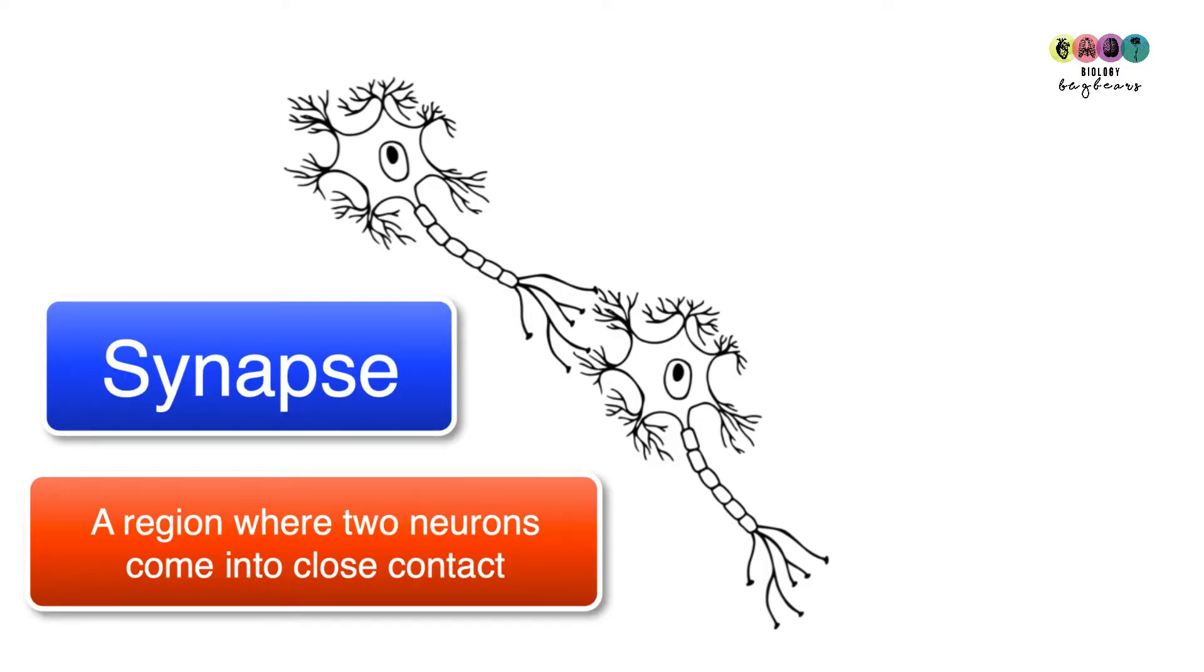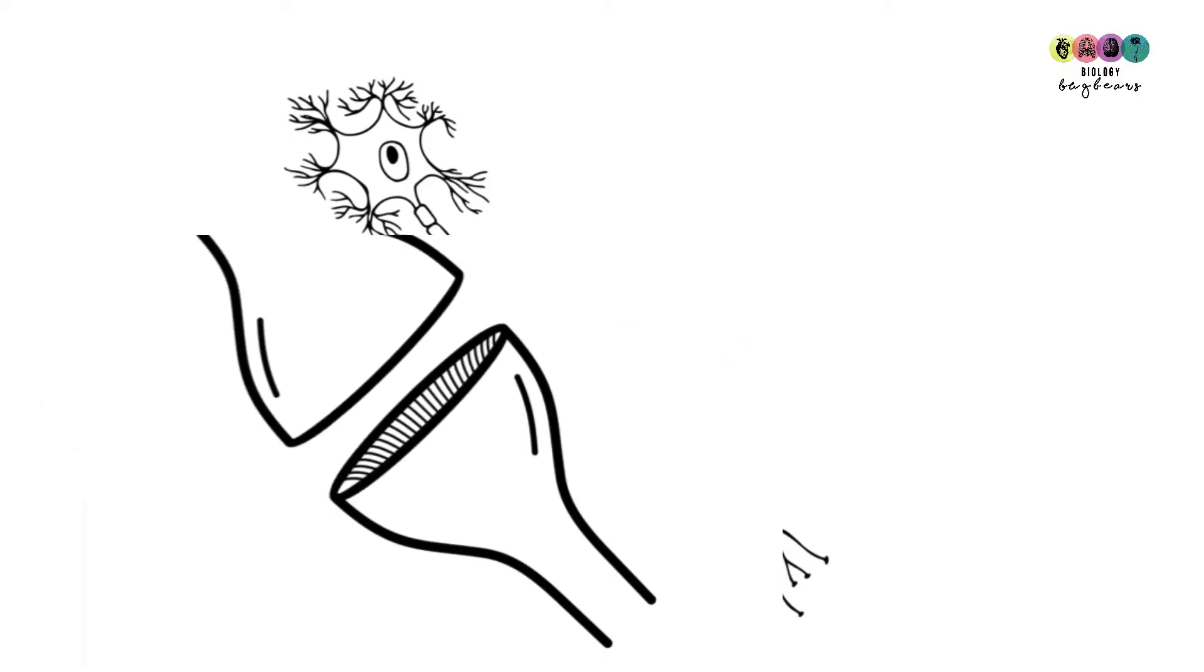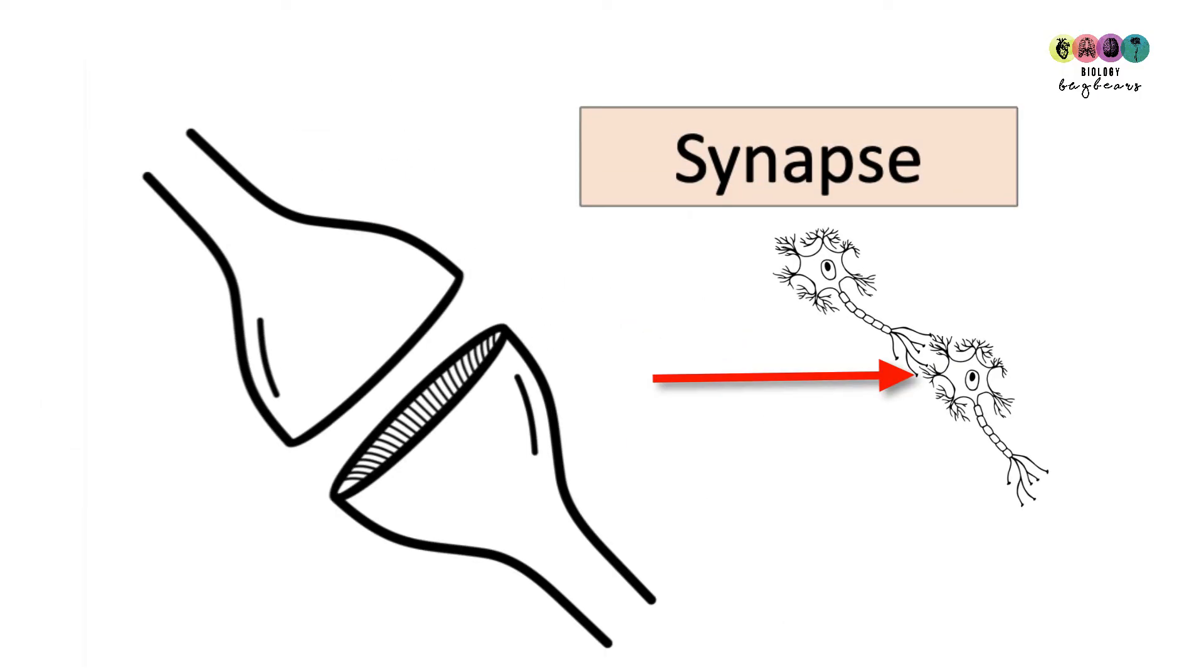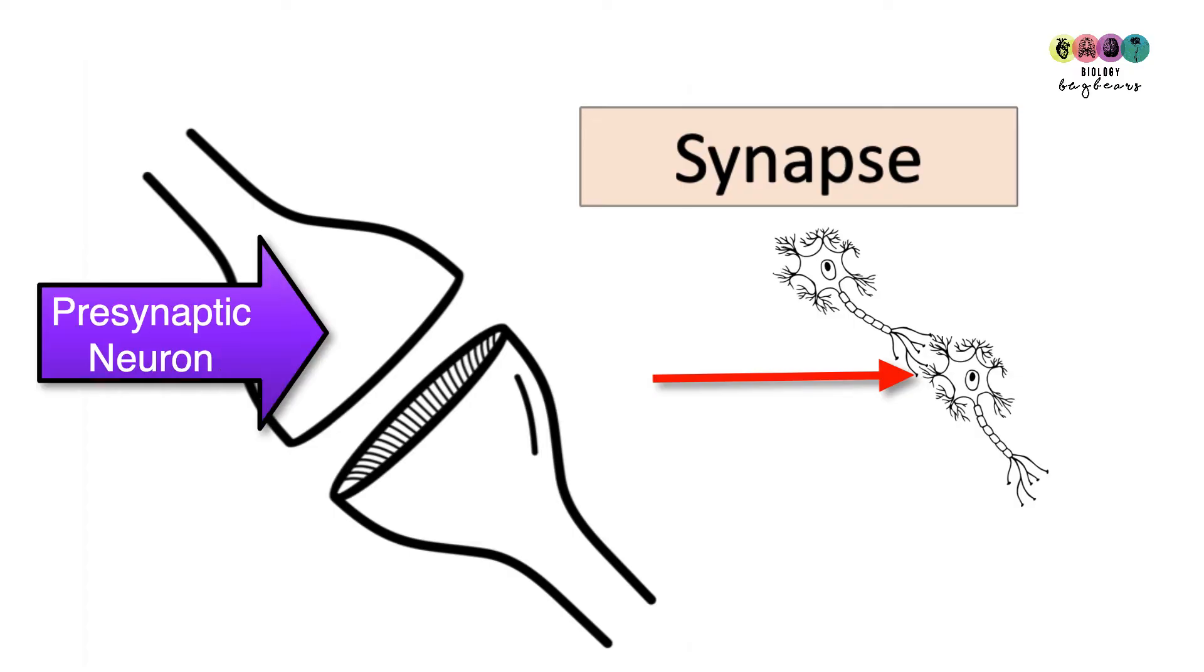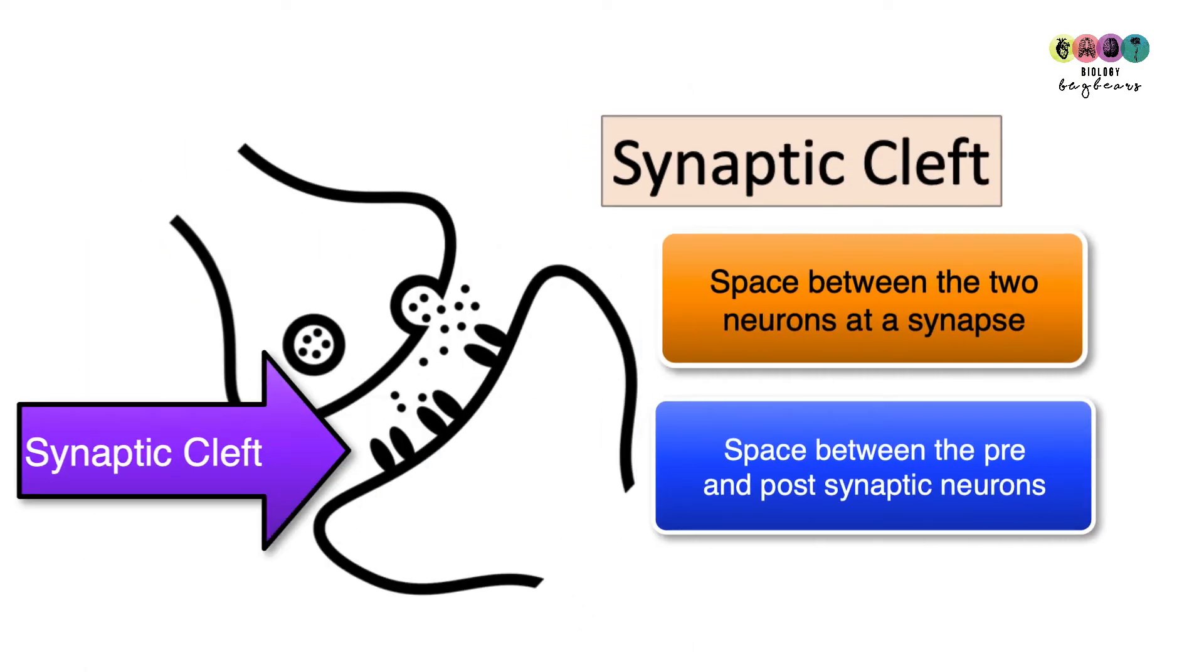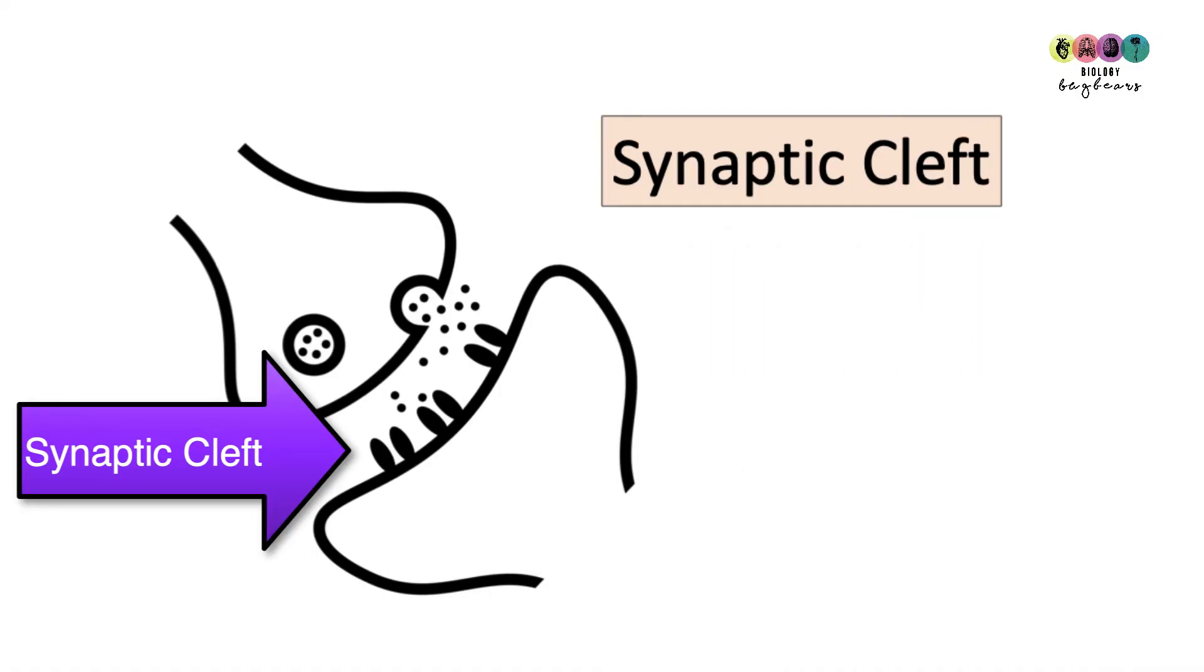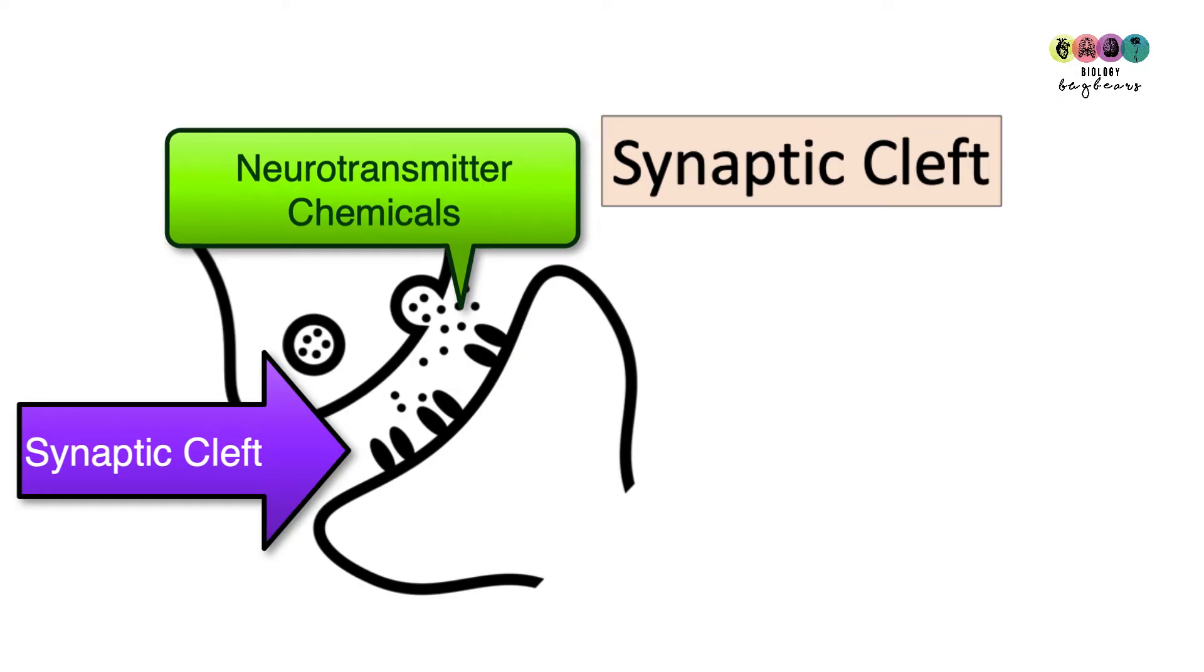The region where two neurons come into close contact is known as a synapse. You can see in the picture the neurotransmitter swellings in close contact with the dendrites of the other neuron. In the diagram, you can see it's made up of a pre-synaptic neuron and a post-synaptic neuron, before the synapse and after it. The space in between the pre-synaptic neuron and the post-synaptic neuron is known as the synaptic cleft. It's the gap. And it's into this synaptic cleft that these special neurotransmitter chemicals will be secreted.